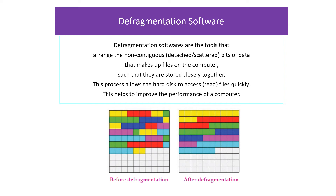Defragmentation software. These are tools that arrange the non-contiguous — scattered — bits of data that make up files on the computer such that they are stored closely together. This process of defragmentation allows the hard disk to read files quickly, helping to improve the performance of a computer. The two pictures shown will easily explain the meaning.